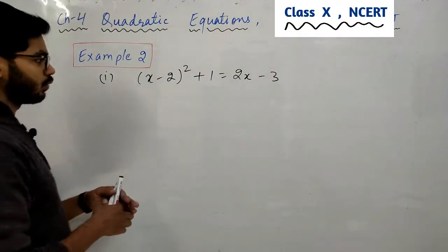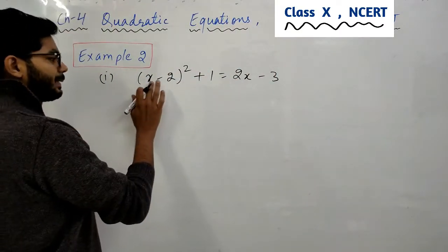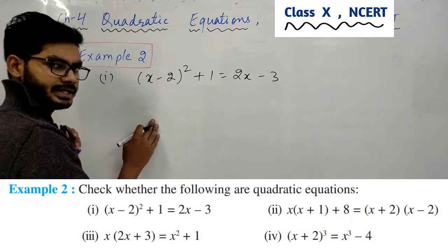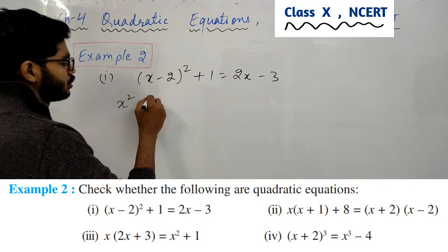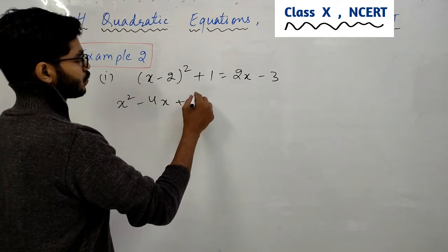First part we have to write. Here (x-2)² + 1 = 8x - 3. A minus B whole square identity, what can you do? A² - 2AB + B².